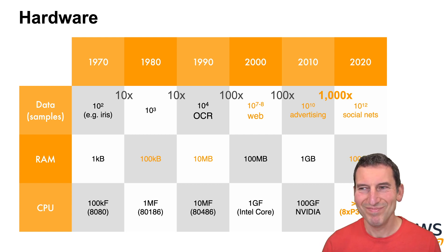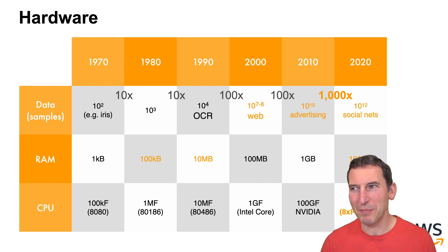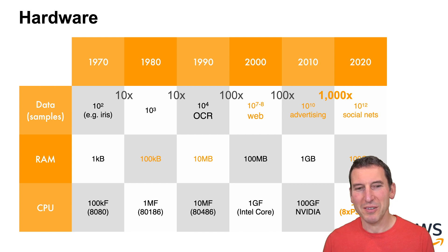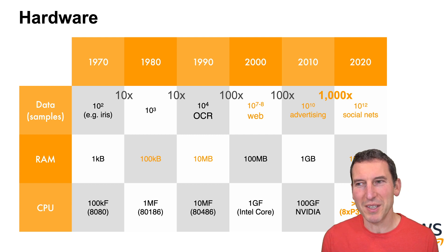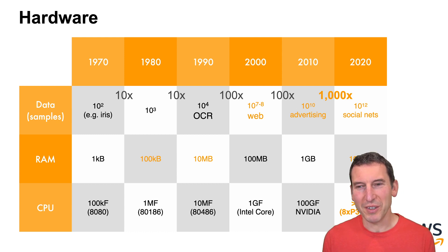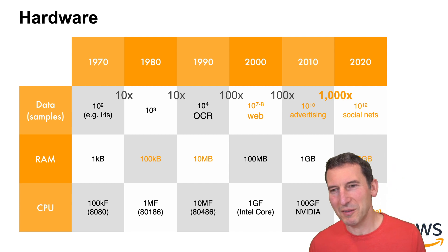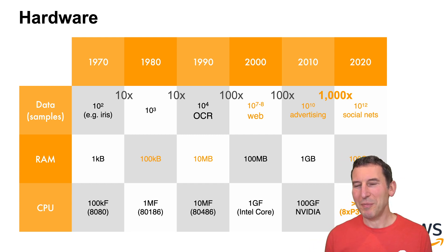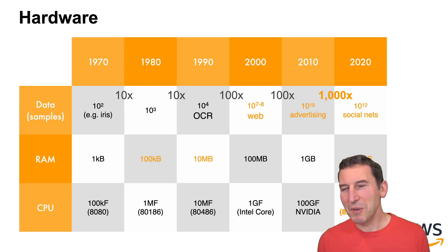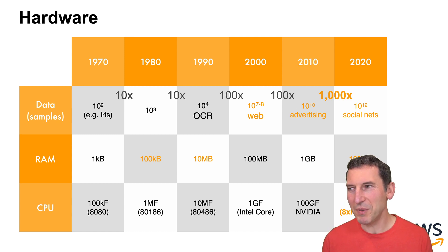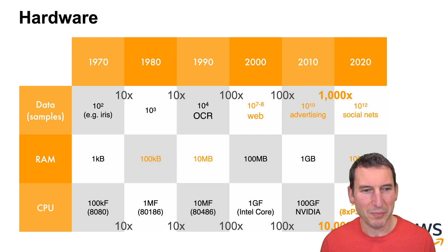The amount of memory went up by a factor of 100 basically every 10 years — though a laptop still only has 8 or 16 gigabytes. What has really changed is floating point operations: we've gone from 100 kiloflops for the first Intel 8080 processor, to a megaflop, to 10 megaflops for the 186, then up by a factor of 100 to the Intel Core architecture, then another factor of 100 through NVIDIA GPUs. The past decade has seen an explosion — the amount of compute has gone up by four orders of magnitude.